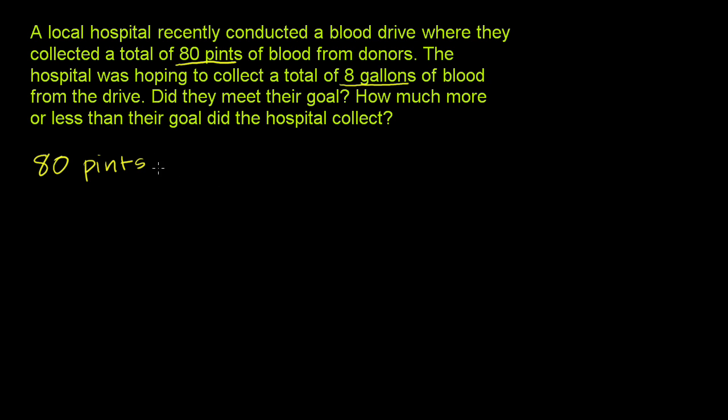We have 80 pints. Should we multiply or divide to get quarts? You're going from a smaller unit, pints, to a larger unit, so you'll have less of that larger unit—you're going to divide. This number will be smaller when it goes into quarts, smaller by a factor of 2, because there are 2 pints per quart. So you divide by 2, or you could say times 1/2, which is the same thing.